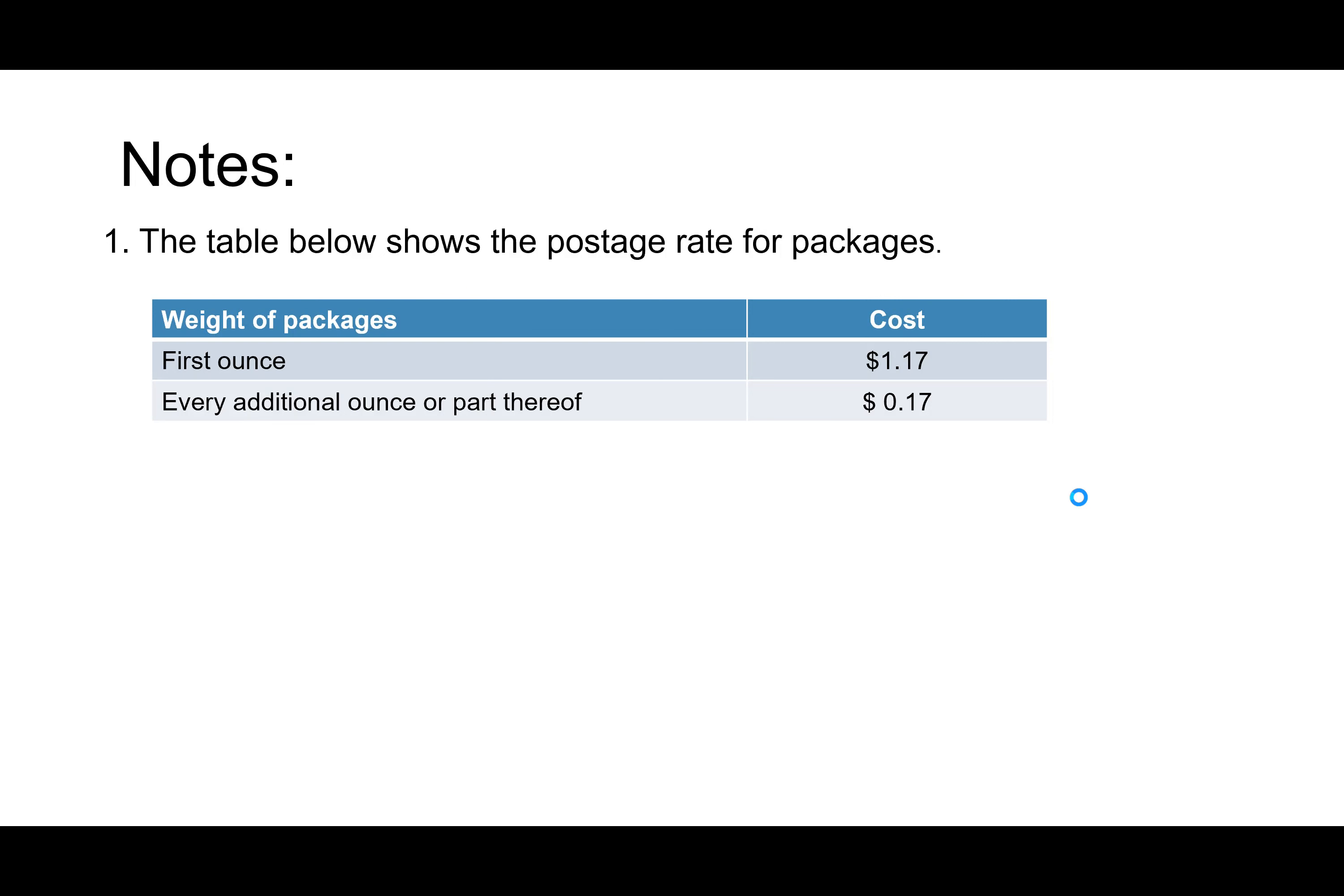Our first problem says the table below shows the postage rate for packages. And we want to know, what is the cost of mailing a package that weighs five ounces? Well, we have to combine rates again, because we've got a rate for the first ounce, and then we've got a different rate for every ounce after the first one. So what did you guys come up with?